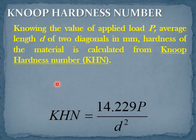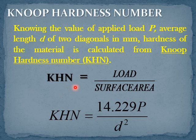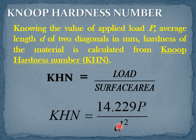The Knoop hardness number is given by the formula: KHN = Load / Surface Area. Substituting the transverse angle and the longitudinal angle, the final formula arrives as: KHN = 14.229 × P / d². Knowing the applied load P and the average diagonal length d, the hardness of the material is calculated from the Knoop hardness number.